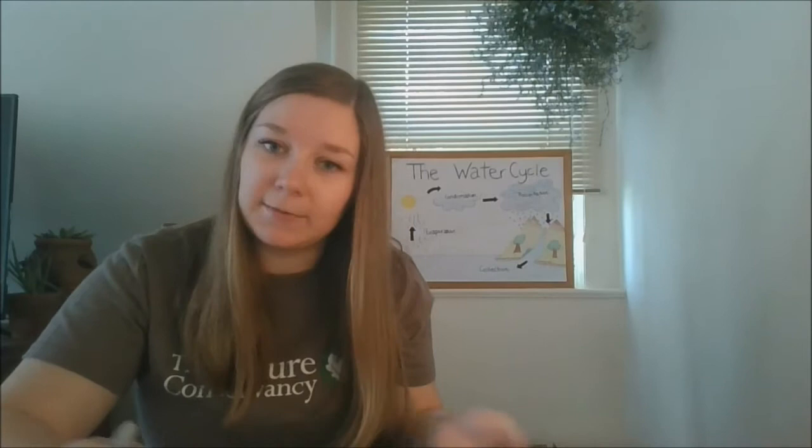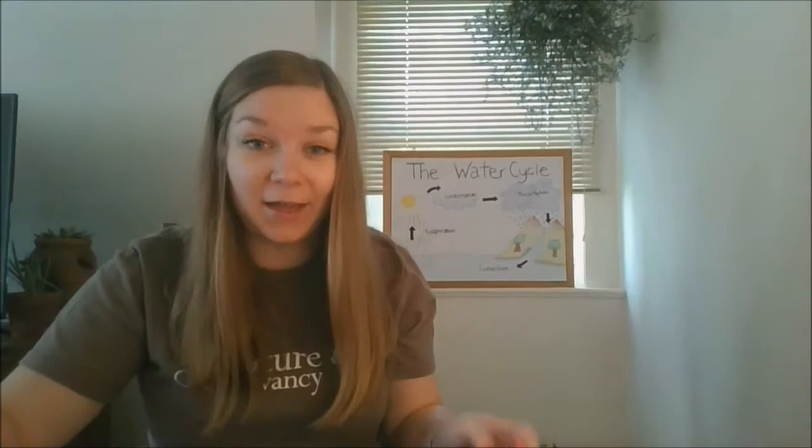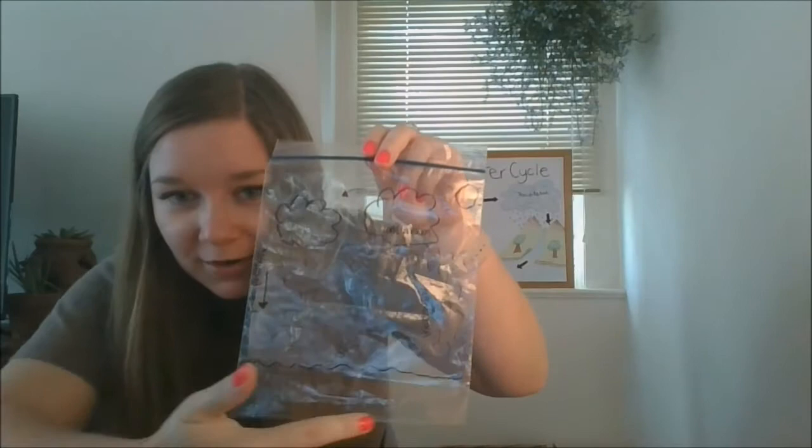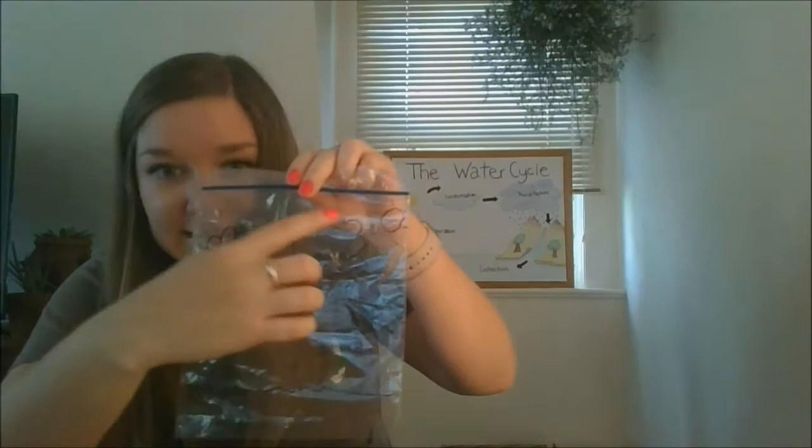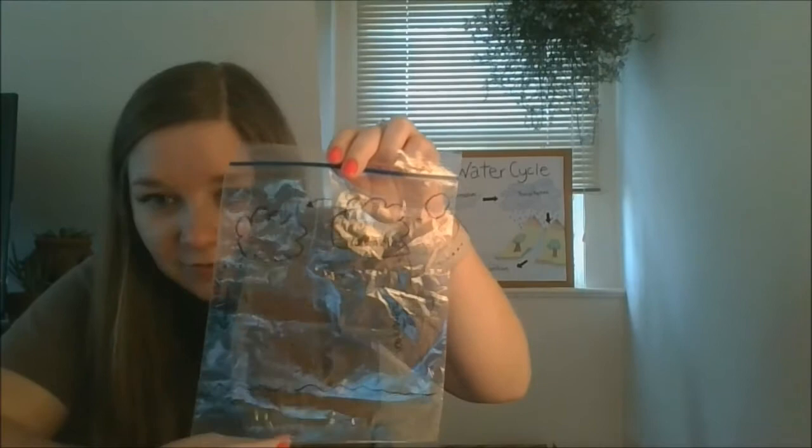So what did we talk about earlier? We talked about the water cycle and how it moves within the system. So you're just going to label your bag with the water cycle. We have the bottom down here with our water source, and then we have evaporation happening from the sun. We have our clouds where it's starting to condensate, and then it starts to precipitate down once it gets heavy enough.